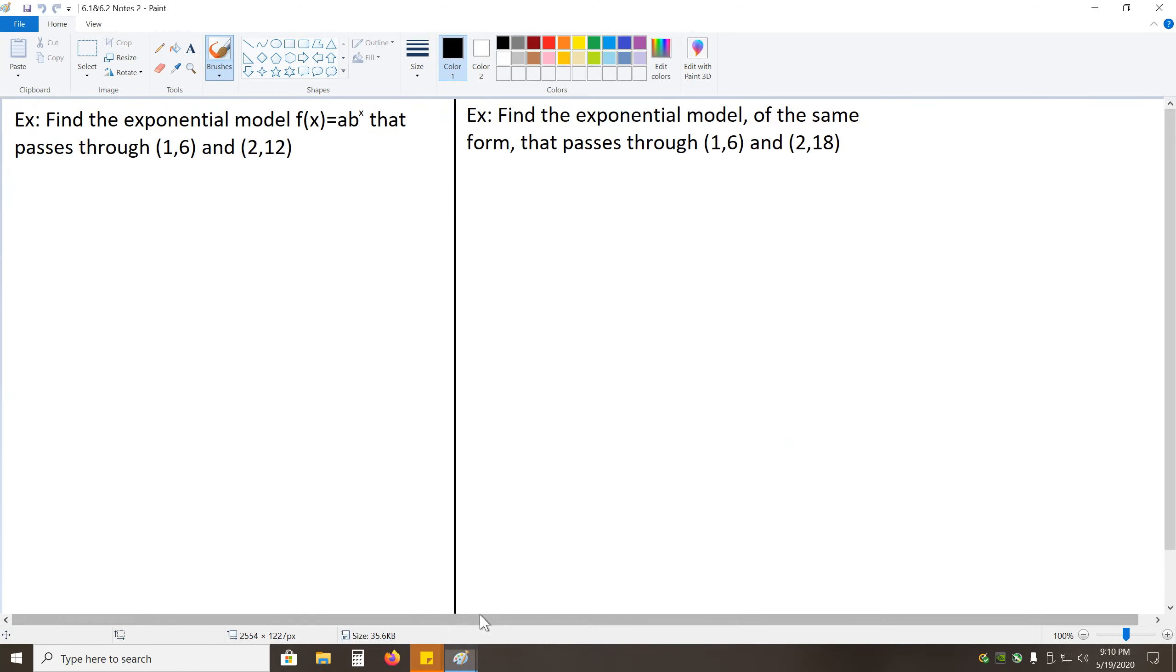So, from here, let's go ahead and try some problems. For this first problem, we want to find the exponential model F of X equals AB to the X, such that it passes through the point 1 comma 6 and 2 comma 12. So, this is a very real world problem. You're given data and you need to model it to predict what will come after or what came before. So, we have two points that we need to model into an exponential function.